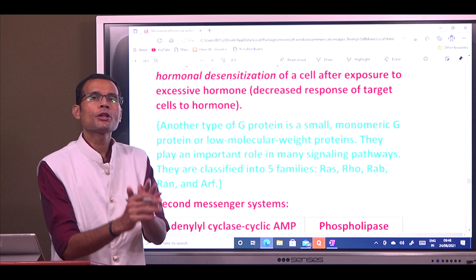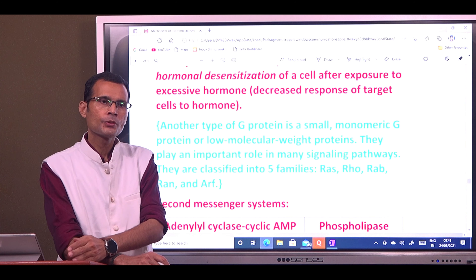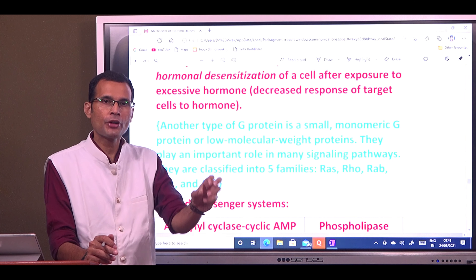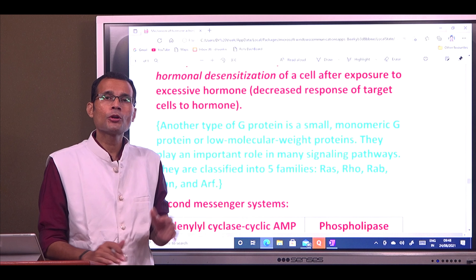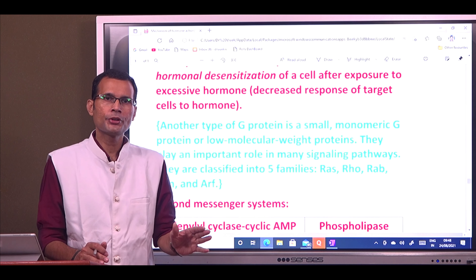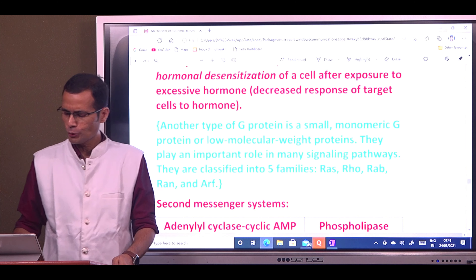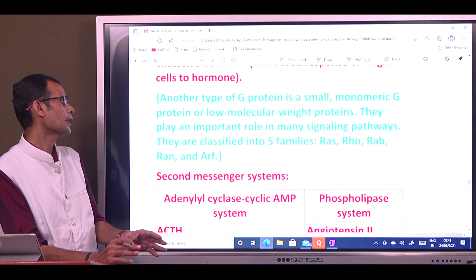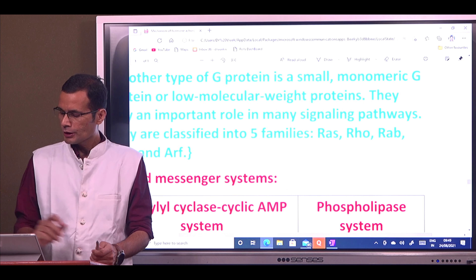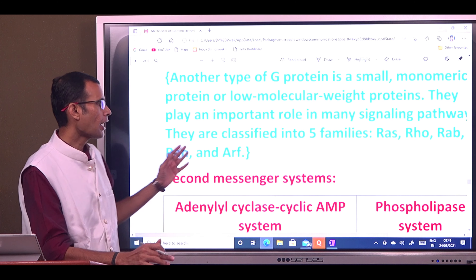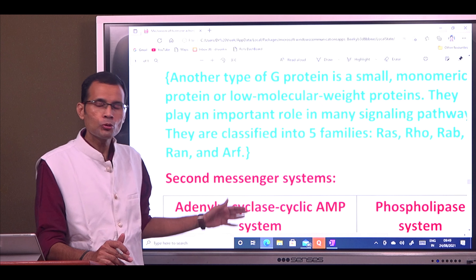In addition to heterotrimeric G proteins with three subunits (alpha, beta, gamma), there are monomeric G proteins — also called low molecular weight G proteins — with a single subunit. There are five families: Ras, Rho, Rab, Ran, and Arf. These play important roles in many signaling pathways.